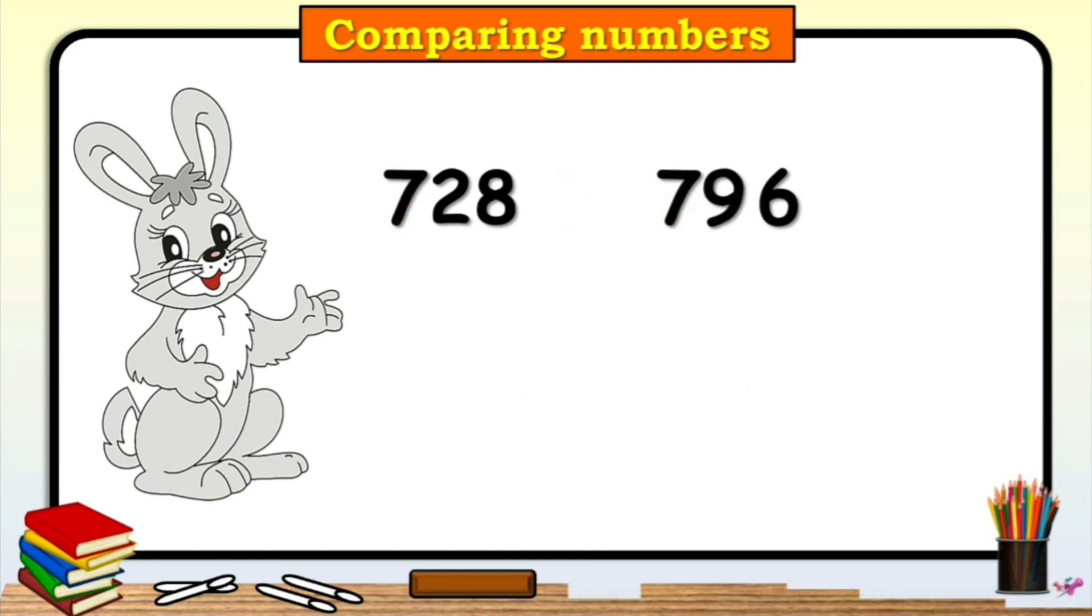Here, we have to compare 728 and 796. Now, which number is greater than the other children? To compare these numbers, again start with the hundreds place. Since both numbers are same, let's look at the next numbers. Let's compare 2 and 9. Clearly, 2 is less than 9. That means, 728 is less than 796.